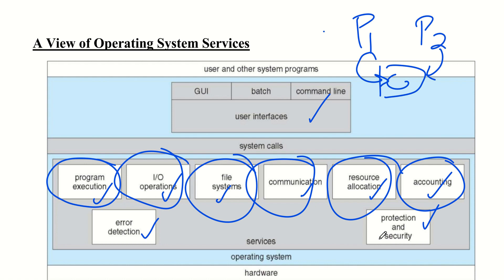Next is protection and security. Protection means controlling access to system resources — ensuring that all access to system resources is controlled. Security means protecting our system from outsiders. Security requires user authentication to prevent unauthorized users from accessing the system. This includes defending external I/O devices from invalid access attempts, using user authentication such as username and password.